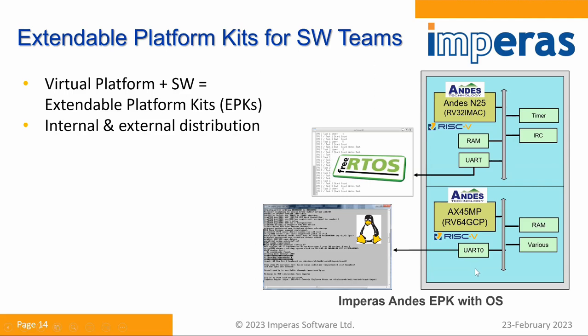On this light-blue virtual platform, we illustrate it with Andes N25 cores connected to peripherals, to memory, with three articles highlighted. On the bottom of this SoC there is an N25 application processor, AX45MP, that boots to SMP Linux. Imperas calls a virtual platform that already has software running an Extended Platform Kit. It's a terrific way to share an already-built, ready-to-go platform with your internal and external team — such as partners or customers — for early software development.